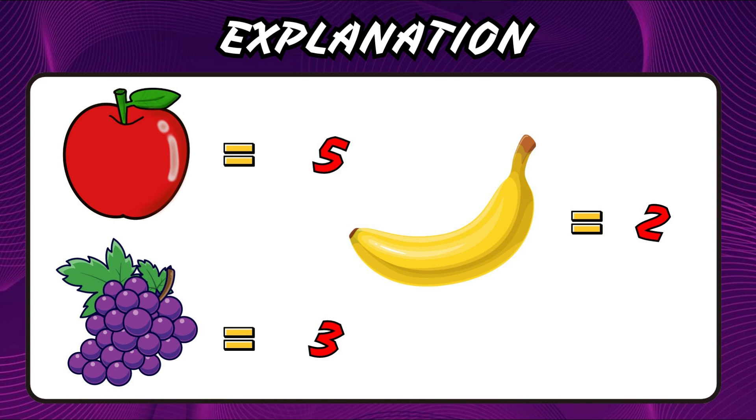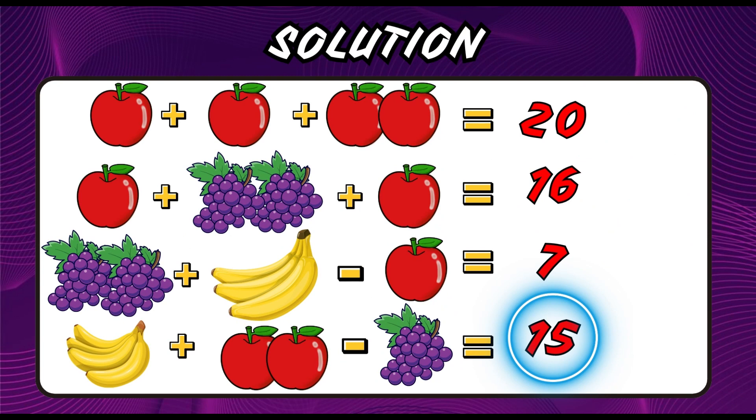Good try! Check the values along with me. The value of the apple is 5, the banana is 2, and the grapes are 3. Apply the values in the equation and solve the answer. So, you get the equation as 8 plus 10 minus 3 equals 15. If you too got 15, that's the correct answer.